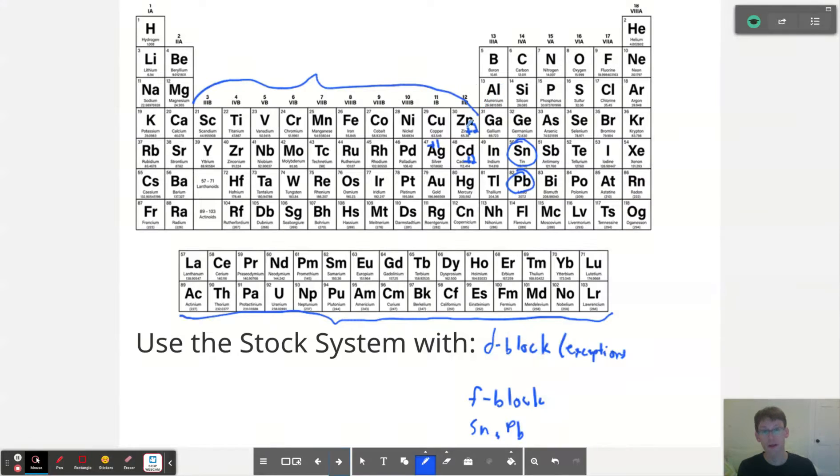Well, that's going to be plus two only. And silver is plus one. Also cadmium plus two. So you get this three, two, one relationship with these exceptions. They're all close to each other and they do follow a pattern. So the exceptions are zinc and cadmium and silver. So you don't need to use the stock system with those three.